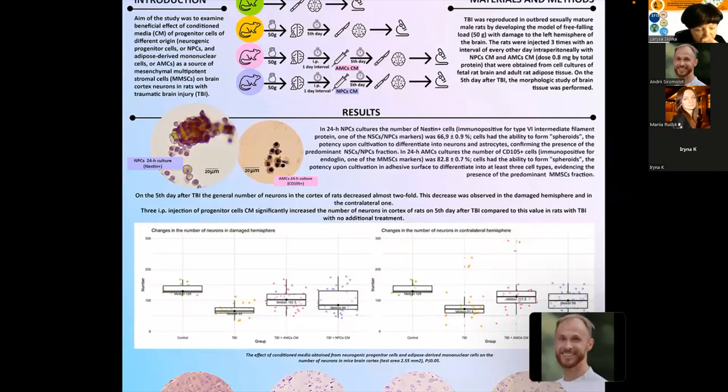On the fifth day after the traumatic brain injury and all three injections, the brains of all groups were removed, fixed in formalin, embedded in paraffin, cut and stained. And then the microscopic examination and photoregistration and comparative histopathological and quantitative analysis of the samples was performed.